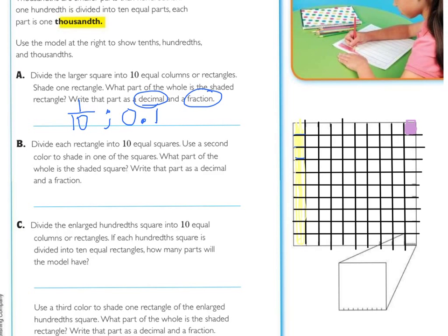What part of the whole is the shaded square? This little square, if you counted them all up, would be one of one hundredths, and they want us to write that as a decimal and a fraction. Well, fraction-wise, I know it's one one-hundredth, so in decimal-wise, I need to have a zero, a decimal. It is not a tenth, so a zero and a one for one one-hundredth.